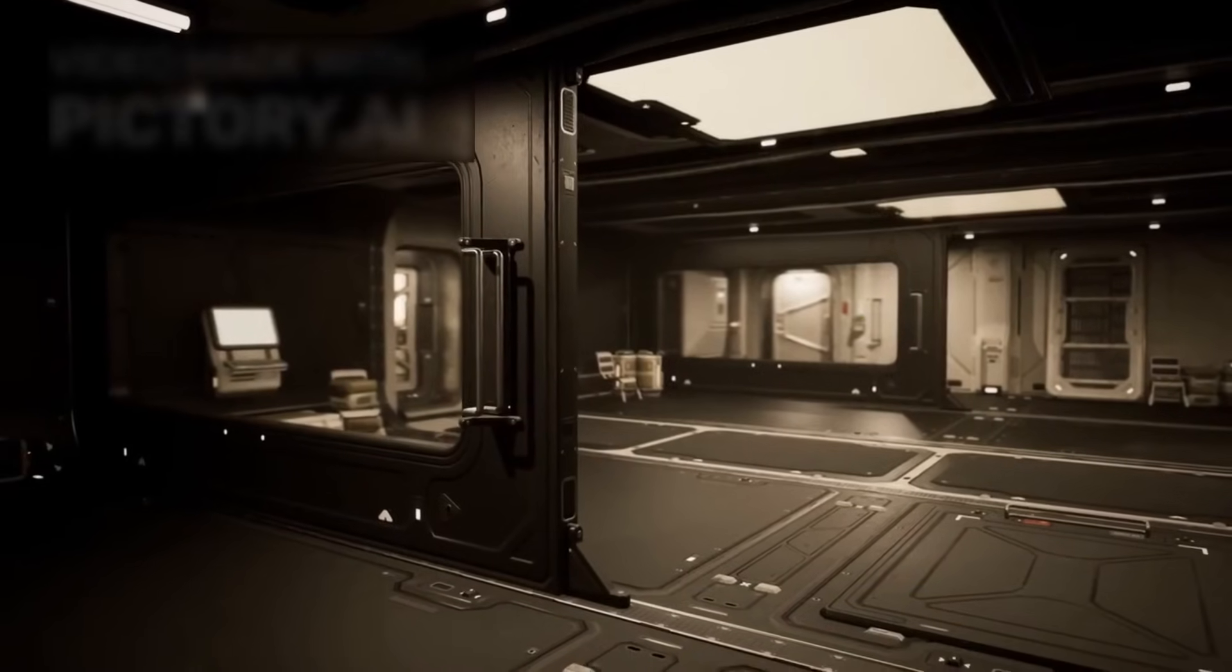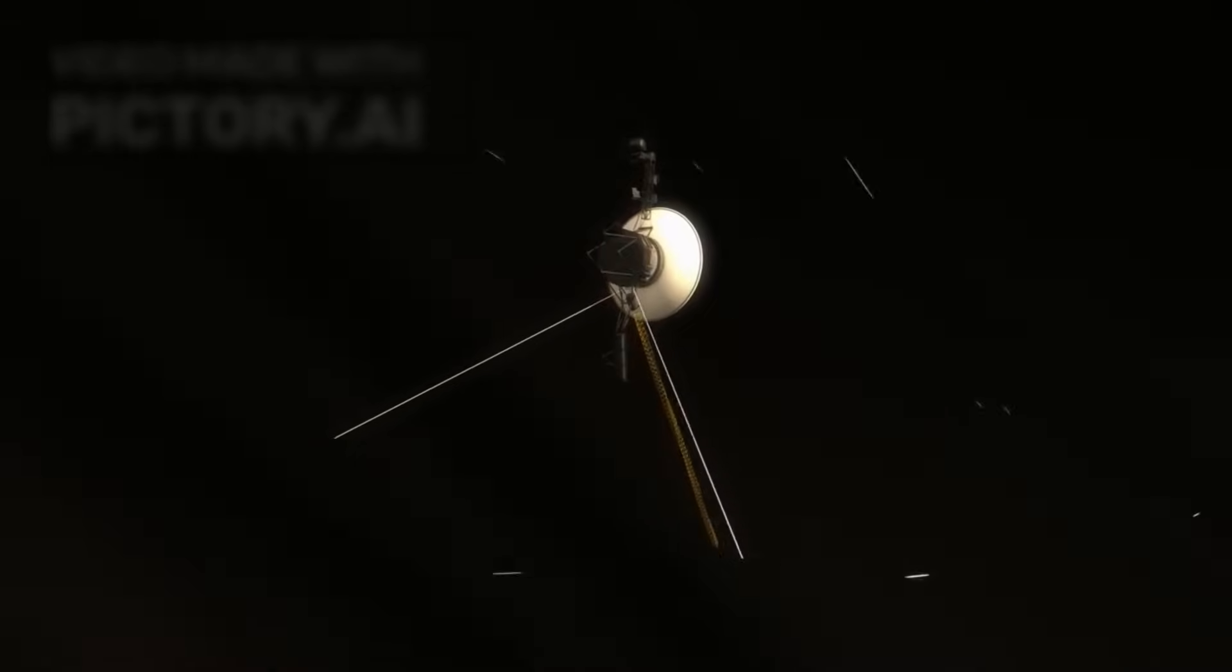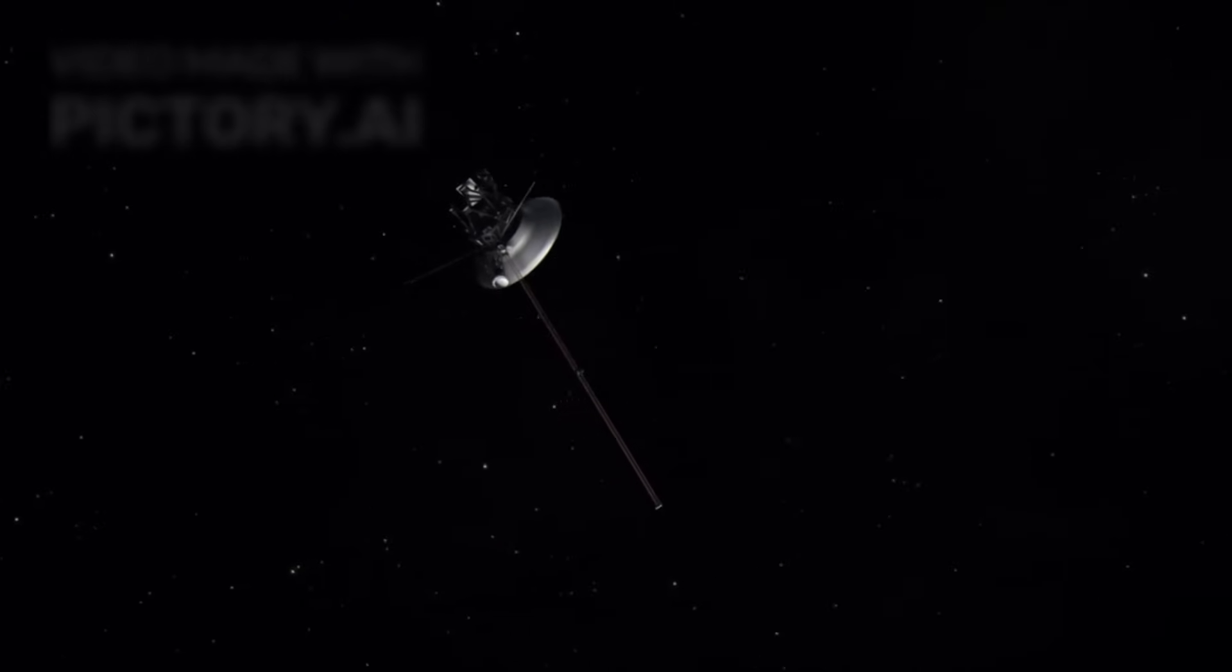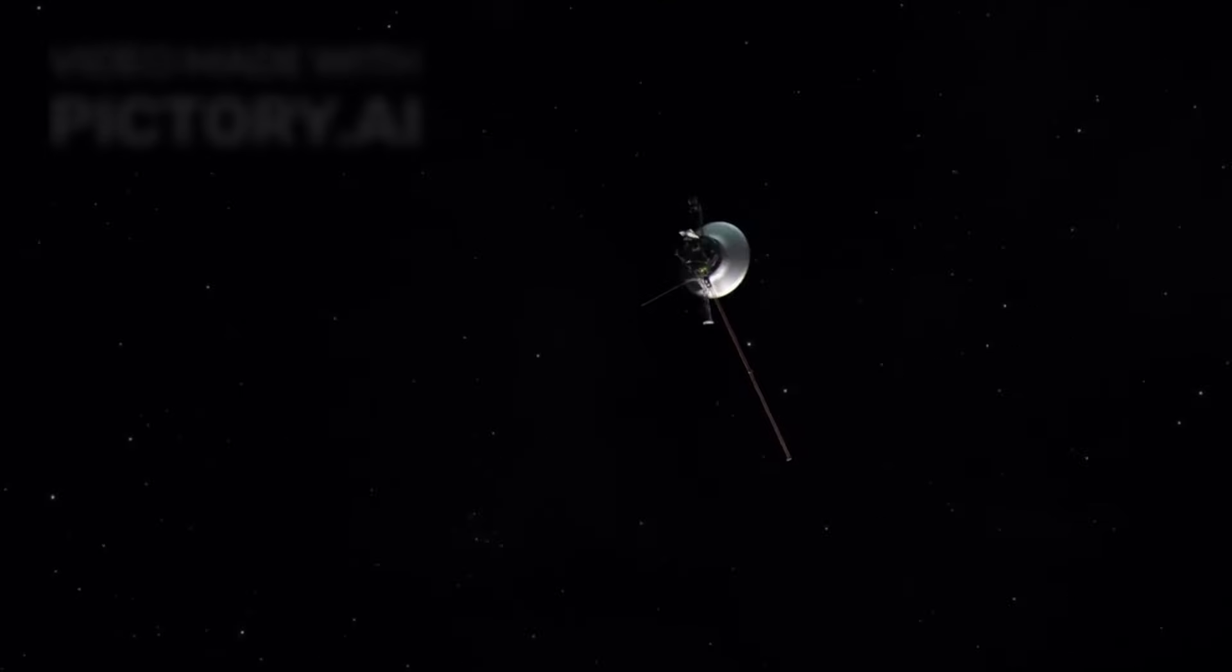And still, they drift. Through the cold and darkness, Voyager 1 and Voyager 2 continue their journey outward. Scientists estimate that they will continue transmitting data until about 2025, when their power will finally run out. After that, they will become silent wanderers, ghost ships sailing the interstellar sea.